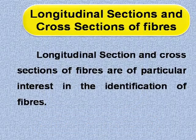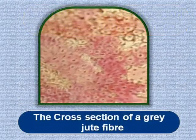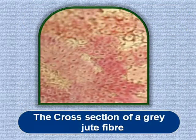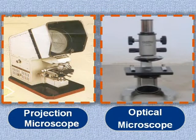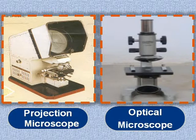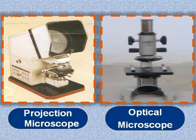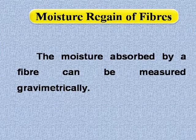Longitudinal sections and cross sections of fibres are of particular interest in the identification of fibres. A projection microscope or optical microscope are quite adequate for this purpose. The technique of sample preparation is described in Lesson 3 of Unit 1 of this course.